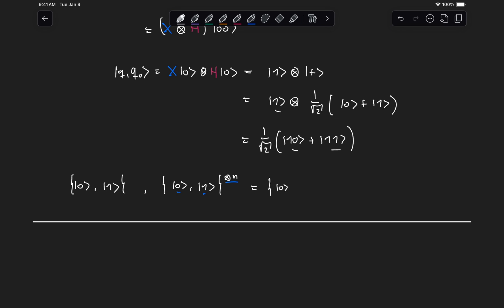So for example, in the case of n equal to 2, we will have the set of possible states, 0 tensor 0, 0 tensor 1, 1 tensor 0, and 1 tensor 1, which as you know, we also write using this shorter notation 00, 01, 10, and 11.